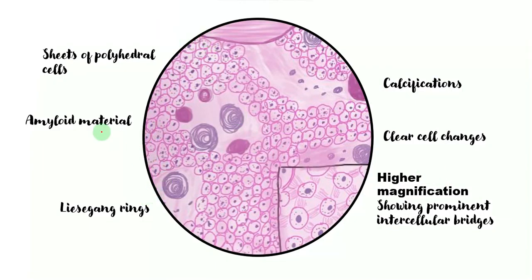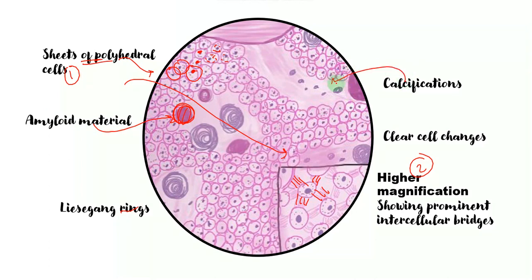Let's see it in the diagram here. There are sheets of polyhedral cells. You can notice the oval nuclei and the finely granular eosinophilic cytoplasm. In higher magnification, I've tried to show you the prominent intracellular bridges. Apart from this, the extracellular changes include intraepithelial structures such as this eosinophilic homogeneous amyloid-like material and the prominent calcifications. The larger ones appear as these Liesegang rings.